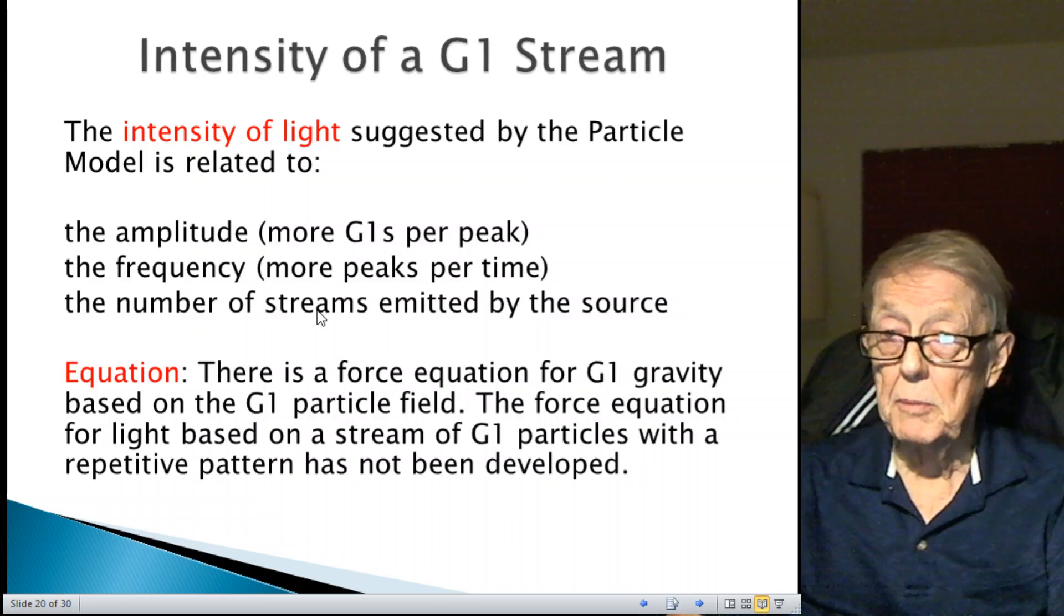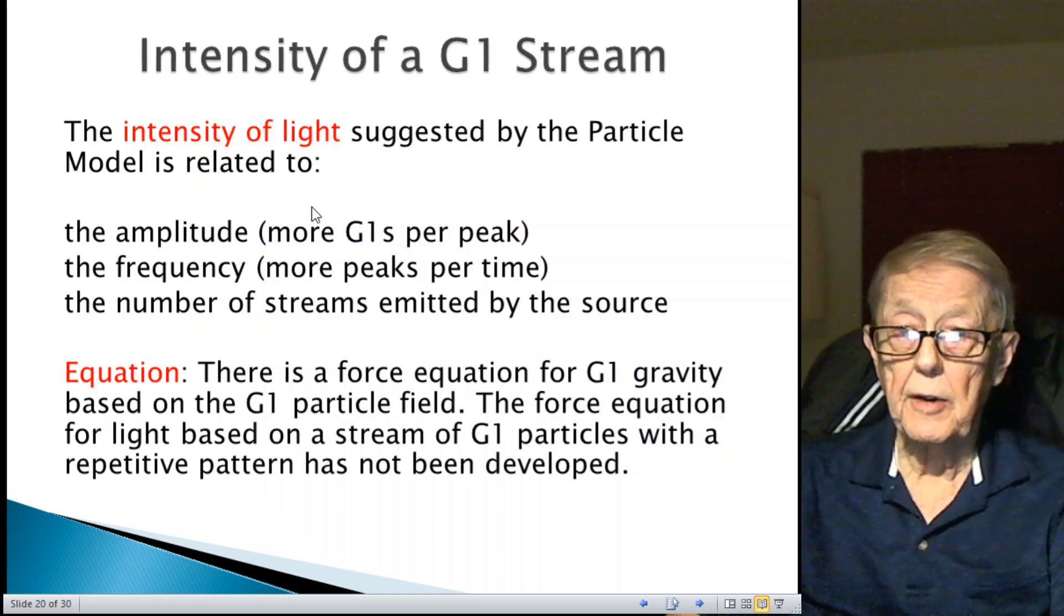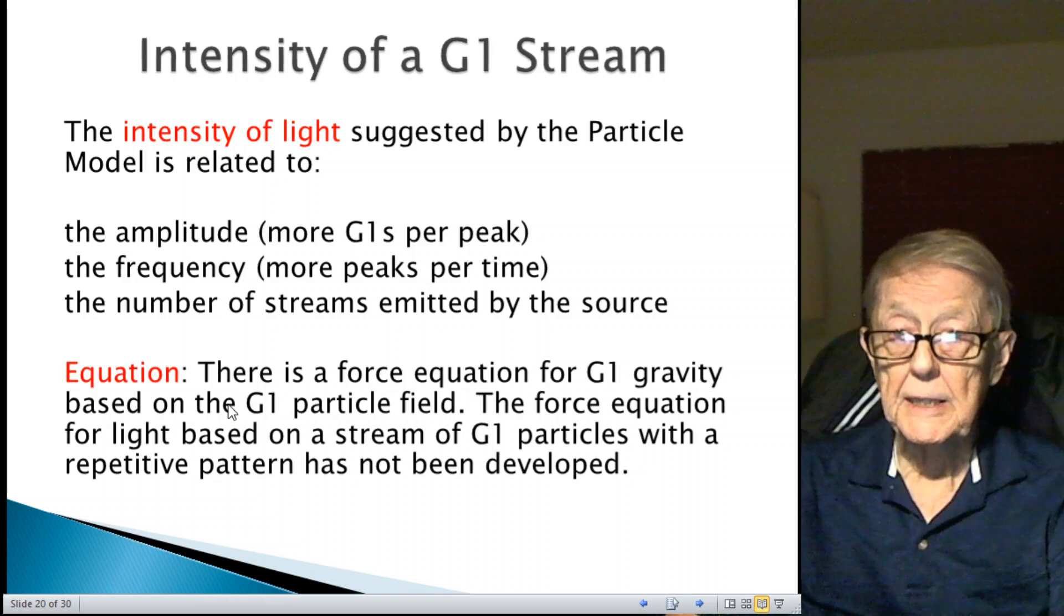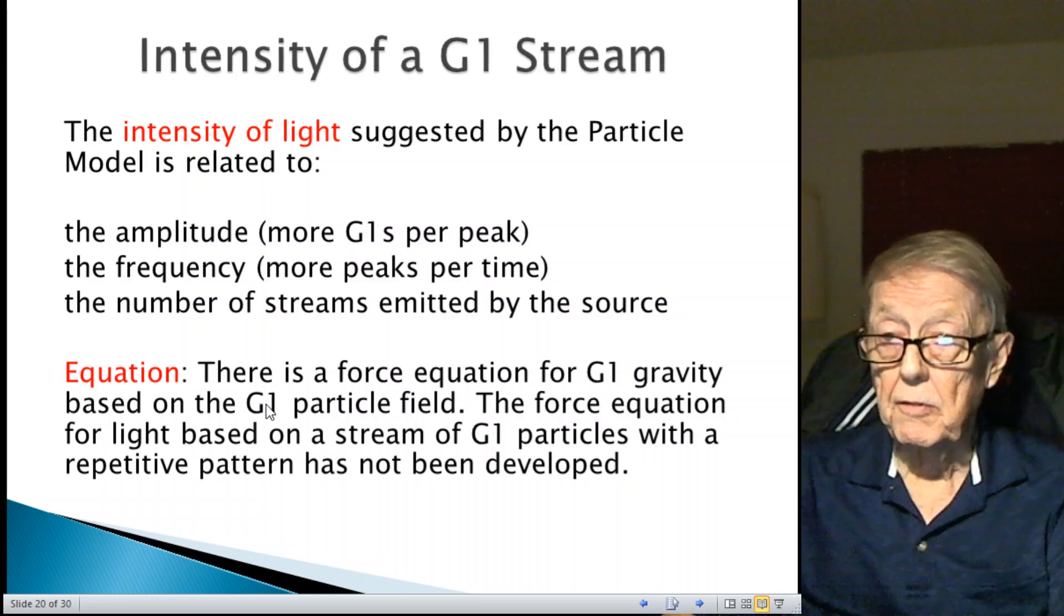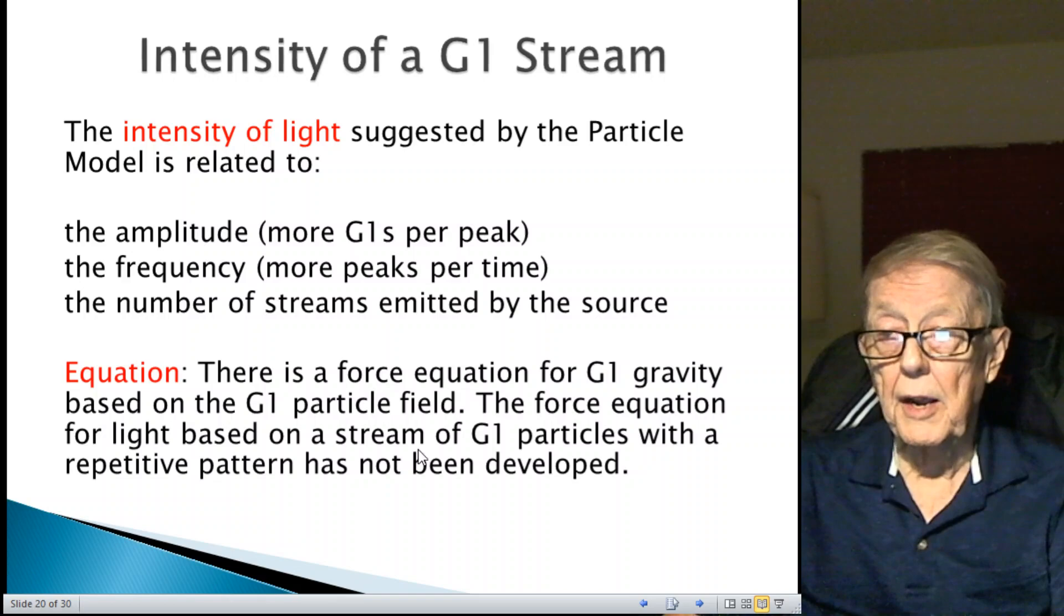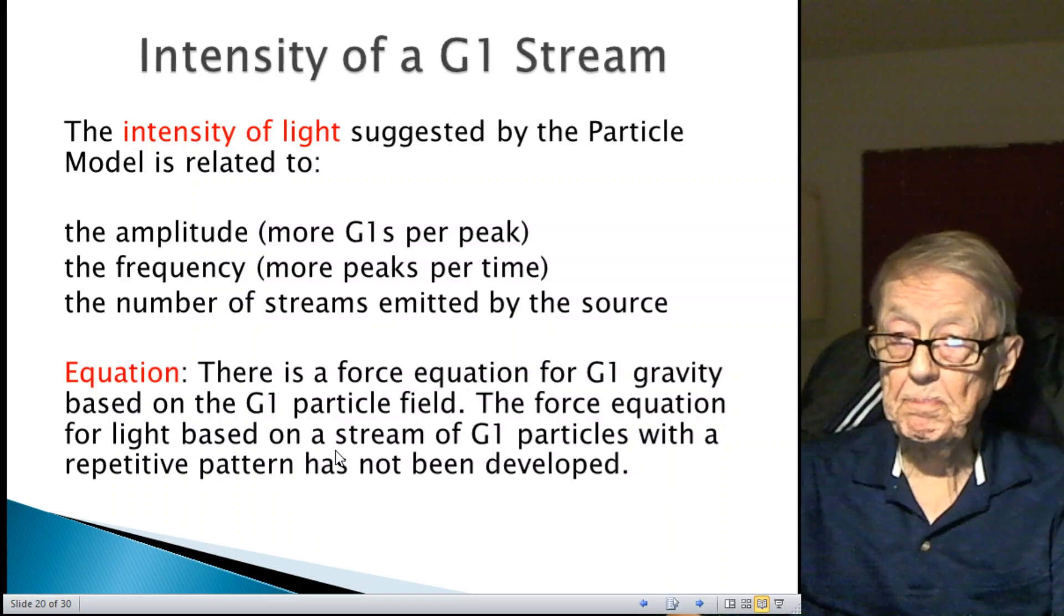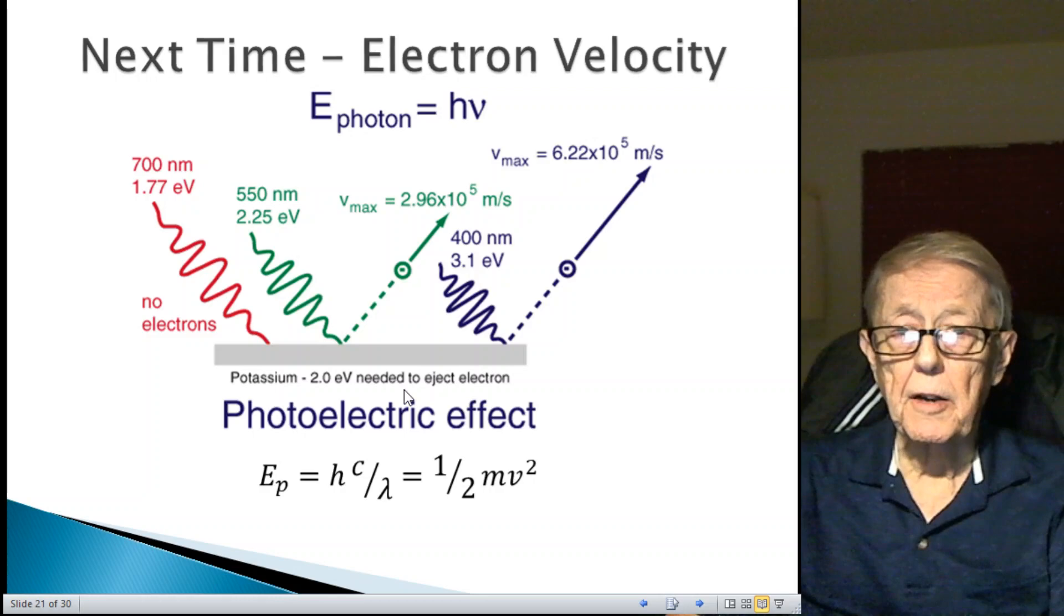What about the number of streams emitted by the source? That's the same as the number of photons emitted by the light. All of these things, to me, could be related. I've not generated an equation for this. Like they have energy equals Planck's constant times the frequency. I don't have an equation. I do have a force equation for G1 gravity based on a G1 particle field. It's a whole different scenario involving the same particle. The force equation for light based on a stream of G1 particles with repetitive pattern hitting the atom and knocking out, I have not drawn that out and tried to develop it. Someday, maybe I'll get to do that.